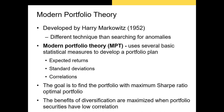The theory behind MPT asks us to estimate expected returns, standard deviations, and correlations between each asset we could possibly invest in. We then adjust the weights of each possible portfolio combination to identify the portfolio combination with the highest Sharpe ratio. That portfolio is the most efficient portfolio because it has the highest risk-adjusted return.